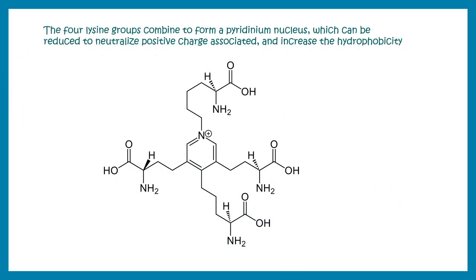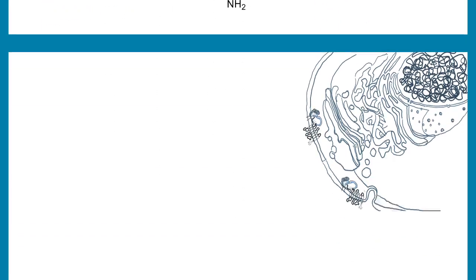The four lysine groups in elastin can combine to form a structure called desmosine, which also contributes to the elastic property. Lysyl oxidase is the key enzyme that helps to form these kinds of cross-linked structures.